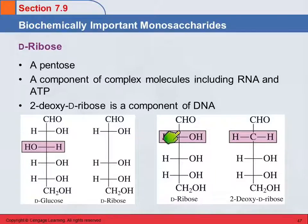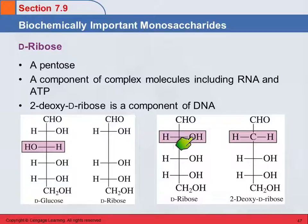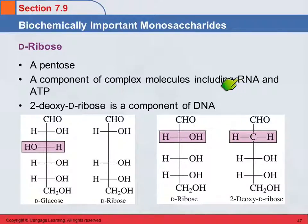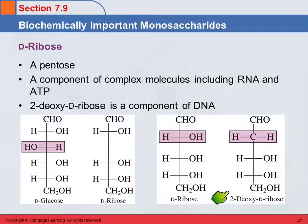If we remove the hydroxy group on the second carbon — that is, carbon 2 — we get 2-deoxyribose, also written as 2-deoxy-D-ribose. This is a component of DNA. Ribose is a component of RNA, which stands for ribonucleic acid — the 'ribo' refers to ribose. DNA is deoxyribonucleic acid and contains deoxyribose. So both ribose and deoxyribose show up in your genes.